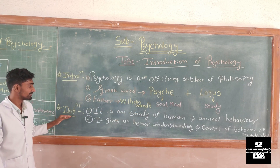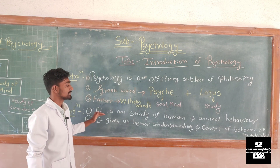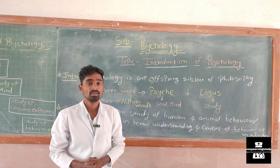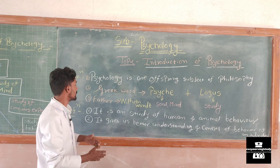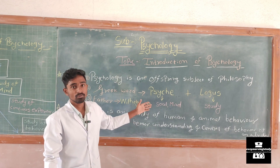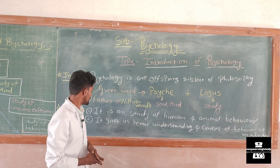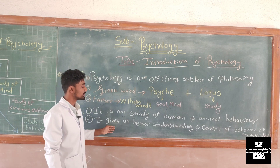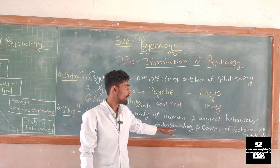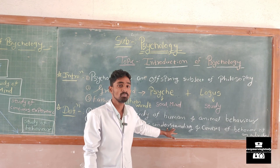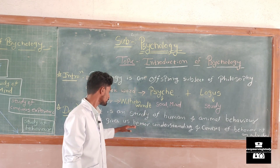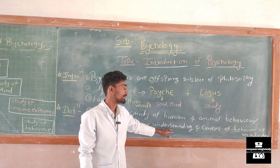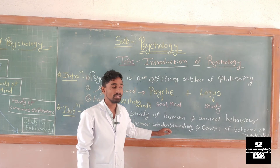Next we will look at the definition of psychology. Psychology is the study of human and animal behavior. It gives us better understanding and control of the behavior of an individual.